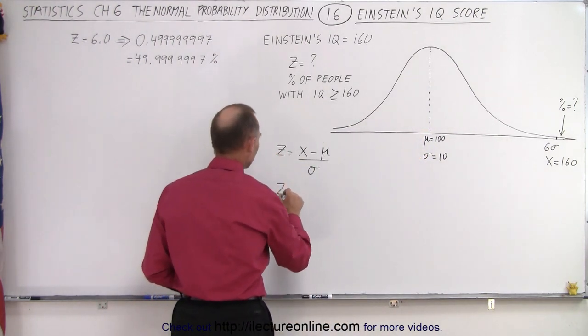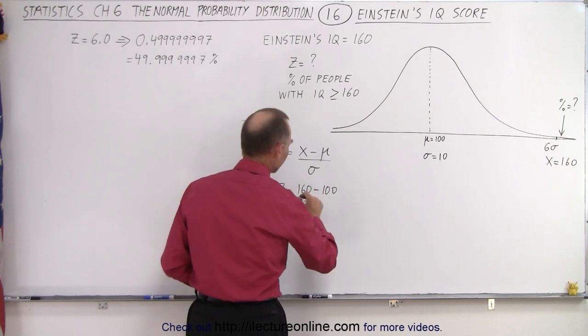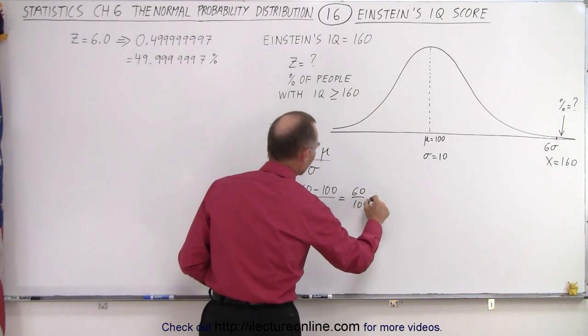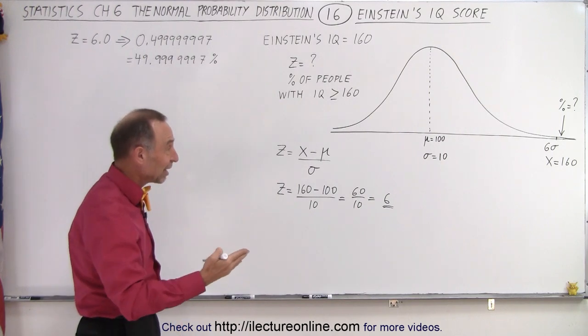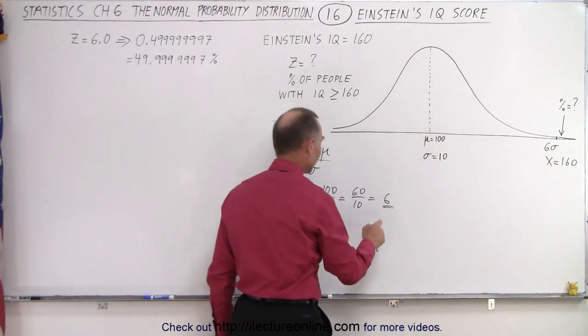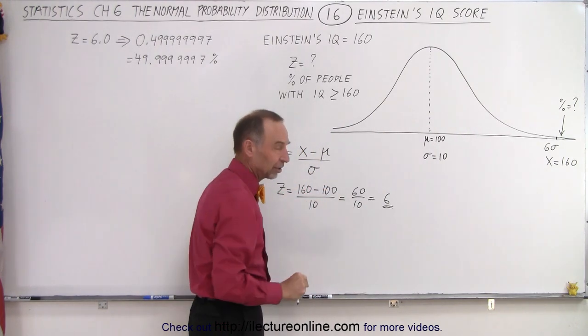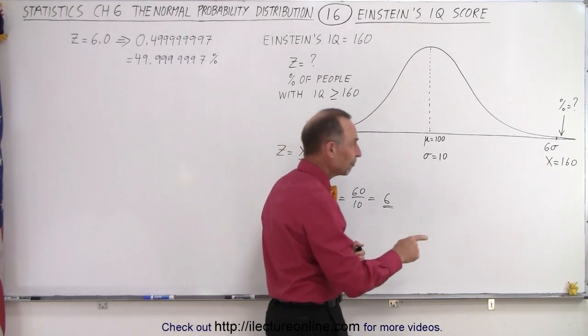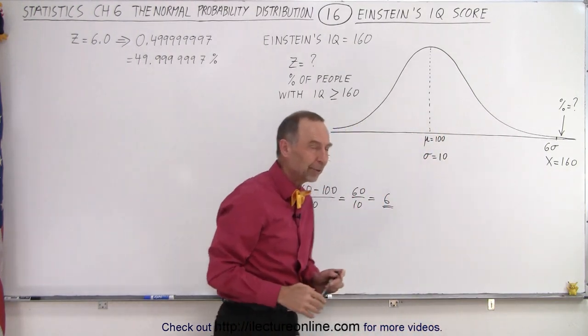So that would be 100 plus 6 times 10, or 6 standard deviations away from the mean. So we get Z is equal to 160 minus 100 divided by 10, which is 60 divided by 10, which is equal to 6. So again, Z represents the number of standard deviations away from the mean. So 6 sigma means 6 times 1 standard deviation, therefore Z equals 6. So Z is the number that goes in front of the sigma to indicate how many sigmas you are away from the mean.